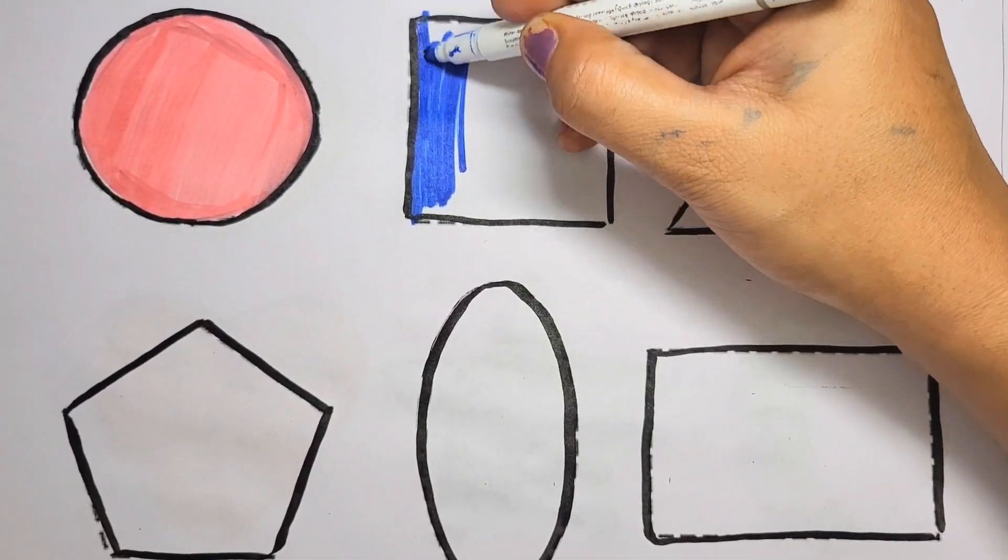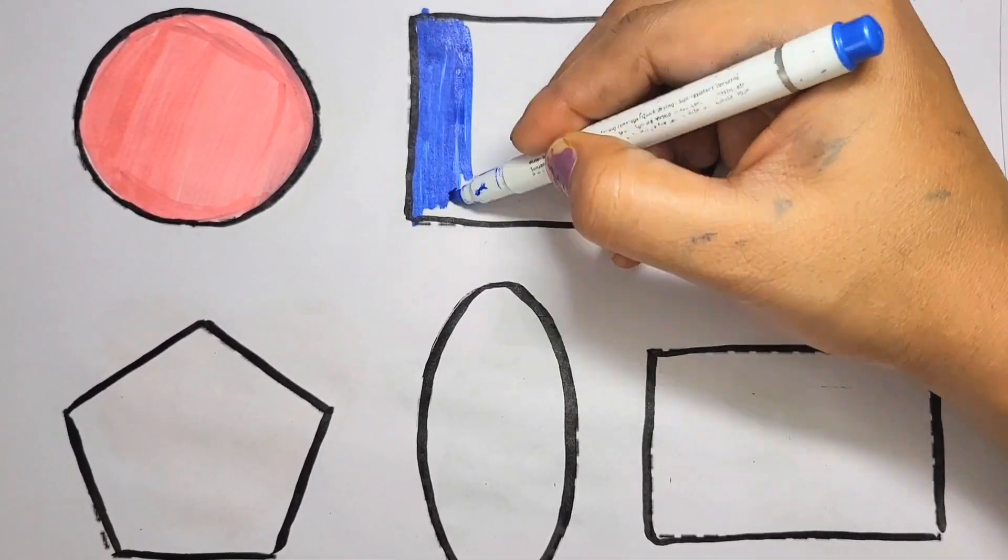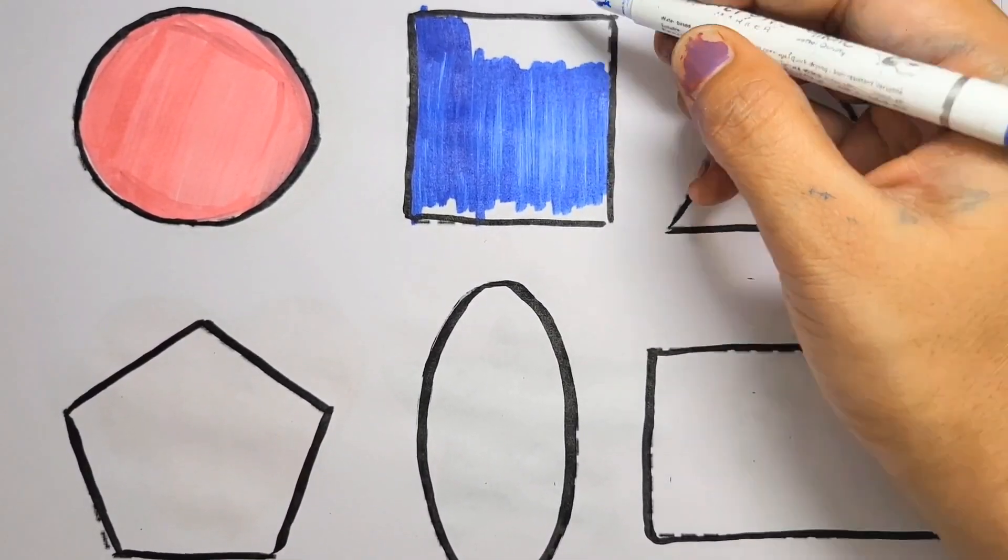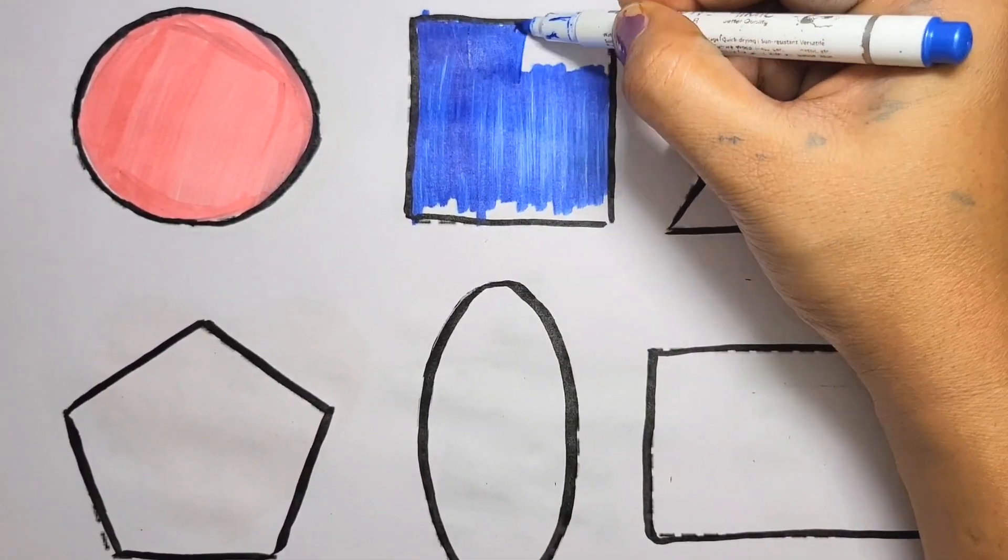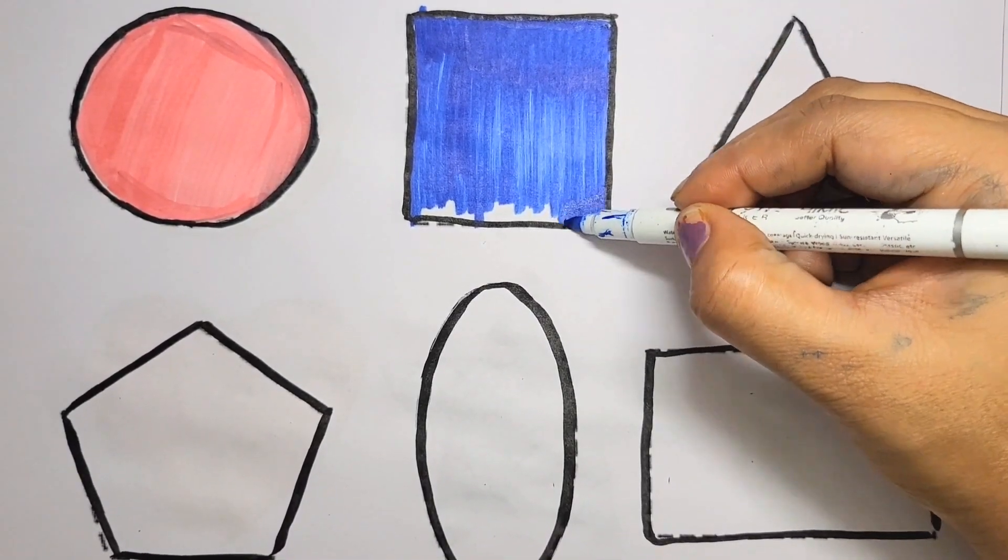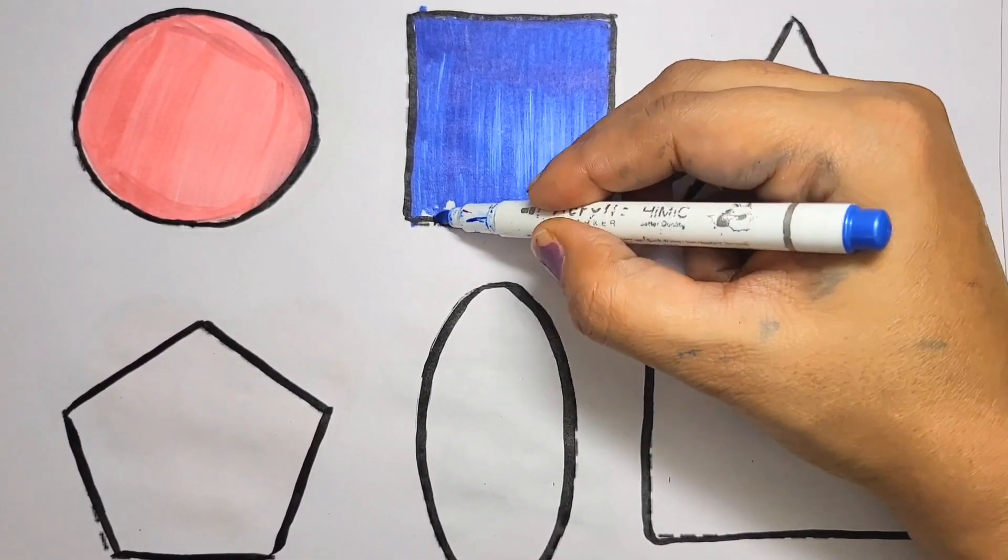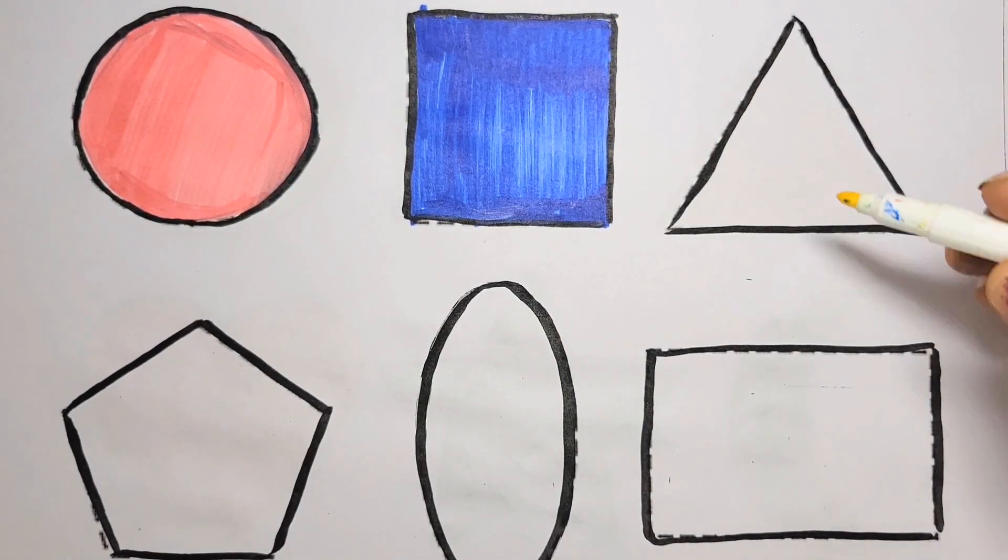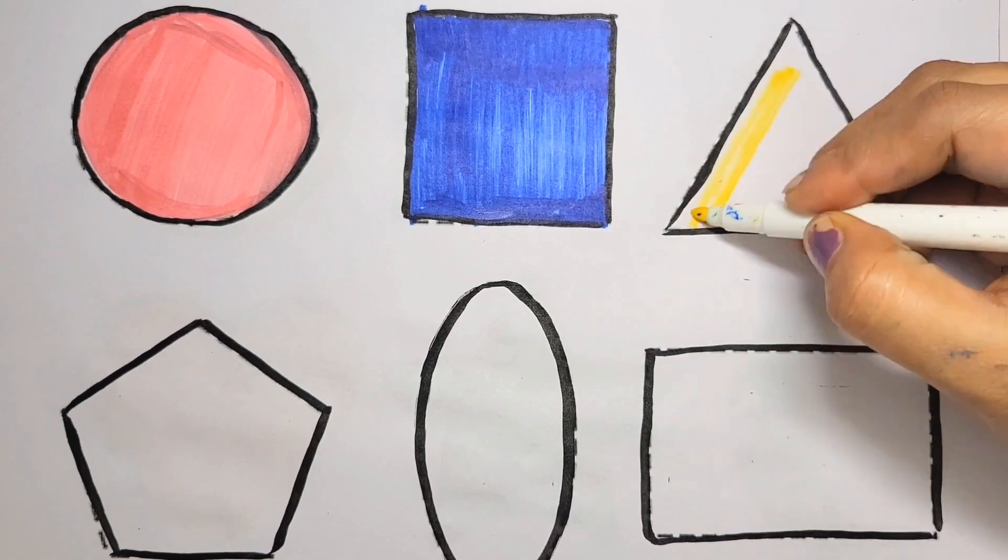Blue color square. Yellow color triangle.